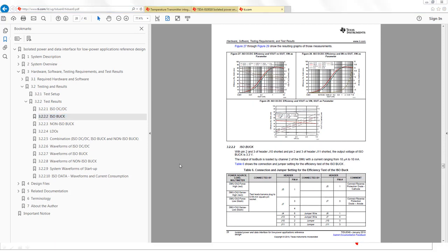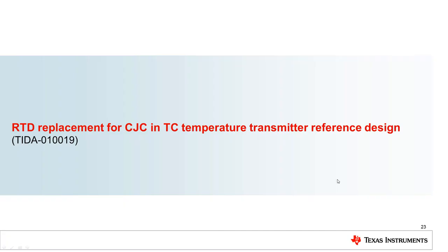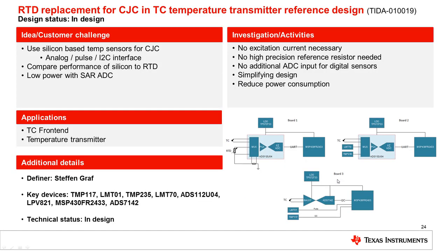Let's have a closer look into this specific reference design — RTD replacement for cold junction compensation in thermocouple temperature transmitters. In this reference design, we investigate the performance of a PT100 element versus a silicon-based temperature sensor. By using such a temperature sensor, no excitation current is required. Also, no high-precision reference resistor is needed. In case you are using a temperature sensor with a digital output, no additional ADC input is needed either.